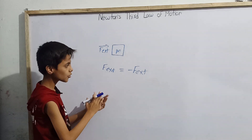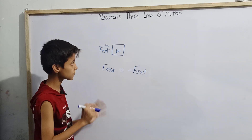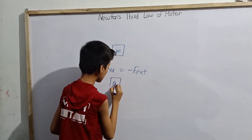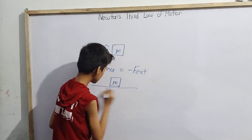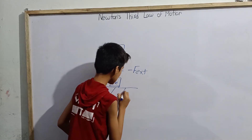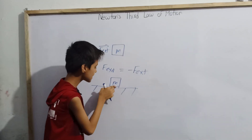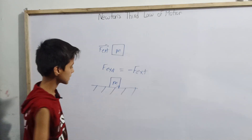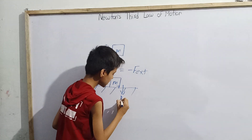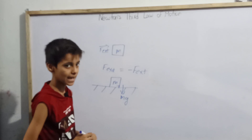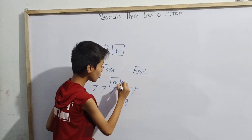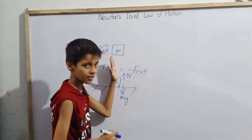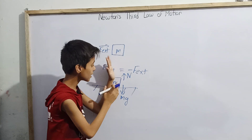All forces are not action-reaction forces at all times. Just like, if we have any block of mass M kept over the surface, here the weight of the block is Mg in the downward direction, because weight is denoted by Mg. And the normal contact force, acting perpendicularly, is N.